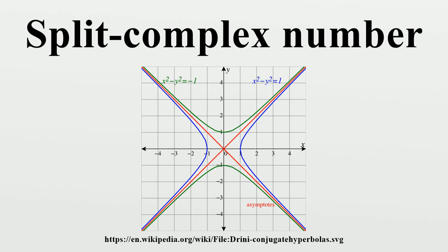Conjugate, modulus, and bilinear form: Just as for complex numbers, one can define the notion of a split complex conjugate. If z equals x plus jy, the conjugate of z is defined as z̄ equals x minus jy.